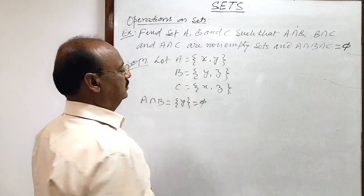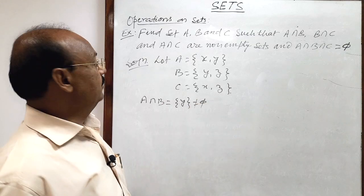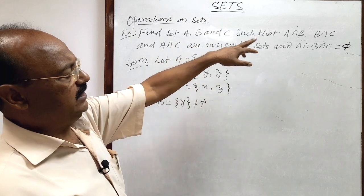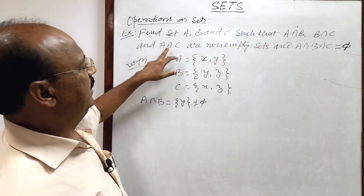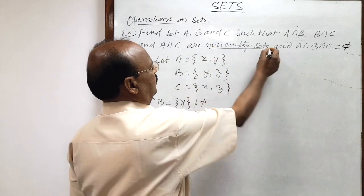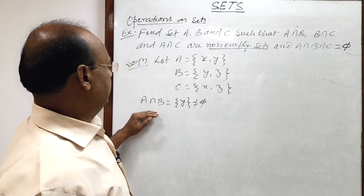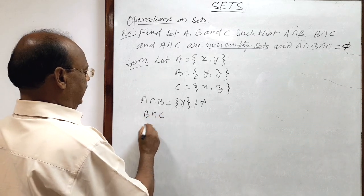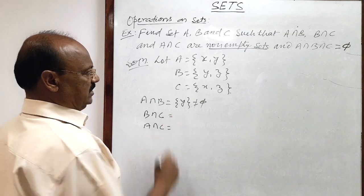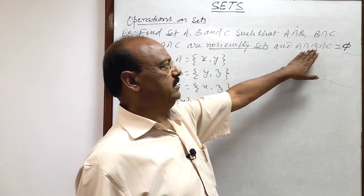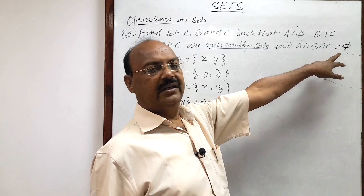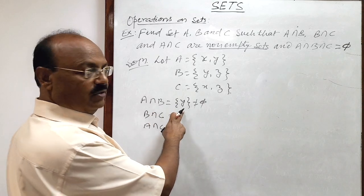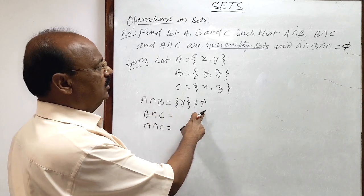A∩B is not a null set — it is a non-empty set, which is exactly what the question demands. We need to show that A∩B, B∩C, and A∩C are all non-empty sets. We have shown here that A∩B consists of the element y, so it is not an empty set.